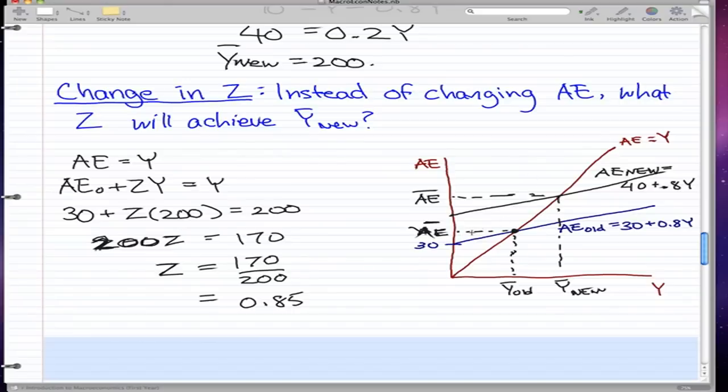Now, what happens when we increase Z instead? So, what will happen is, this line, it pivots on 30, because we didn't really change AE, right? So, all we changed is Z. All we changed is the slope. So, this green line is, let's call it AE new prime, and it will equal to 30 plus 0.85Y, because we didn't really change AE naught, it stayed the same, we're pivoting on 30. We calculated that the slope is actually 0.85, so then the slope is 0.05 more than our AE old, and that's how the new line looks like, and that's all I wanted to show you in this video.